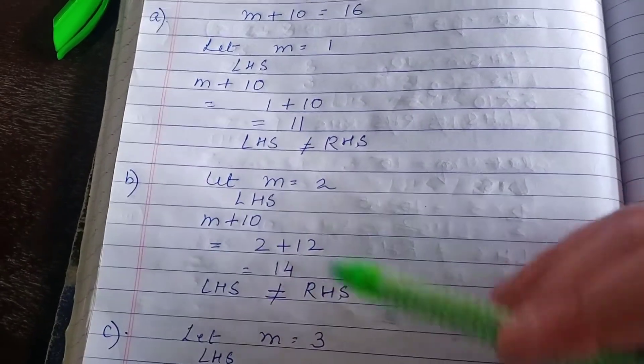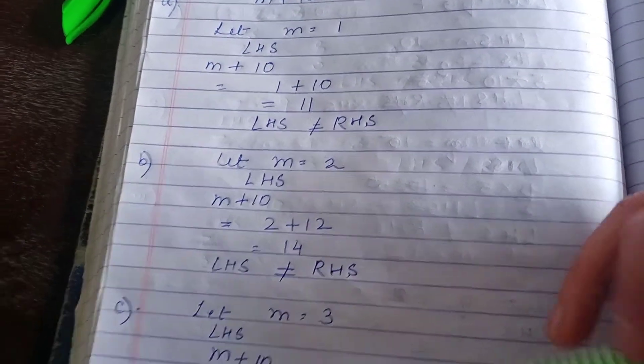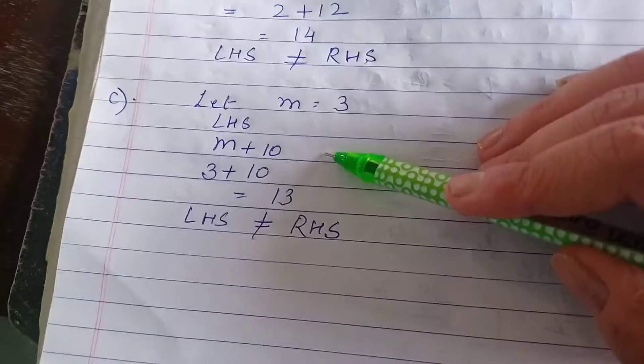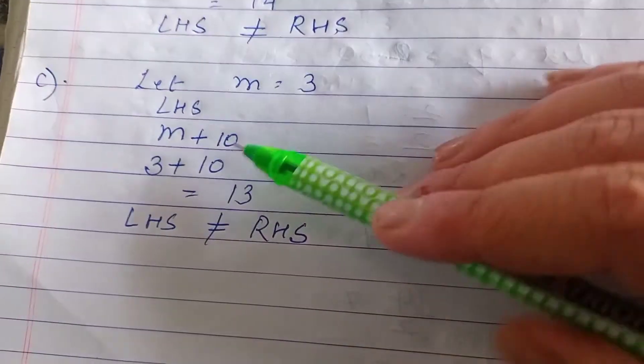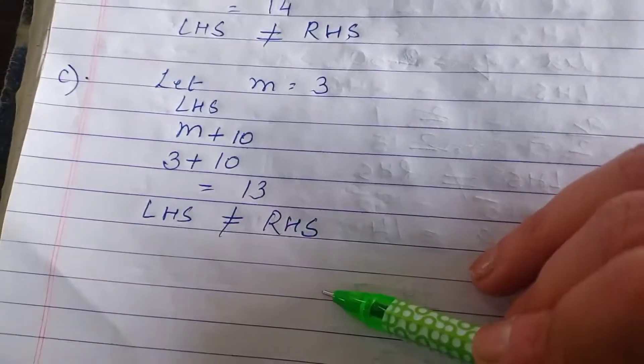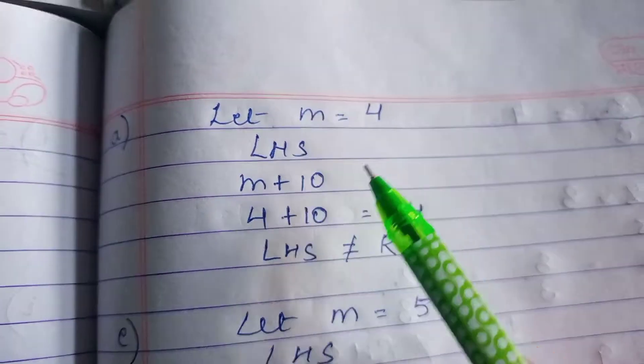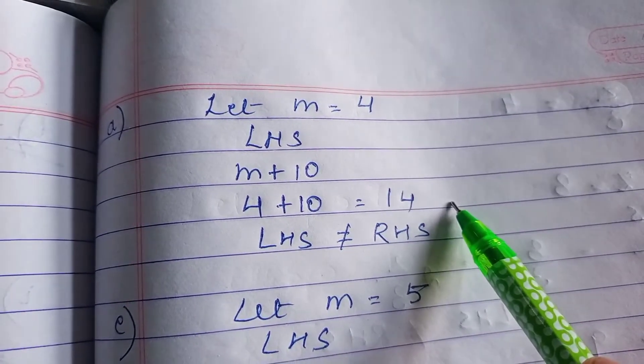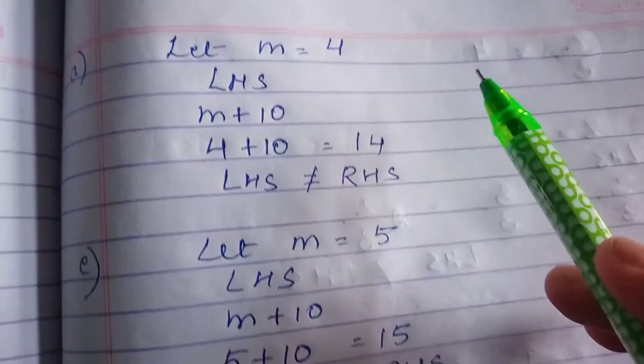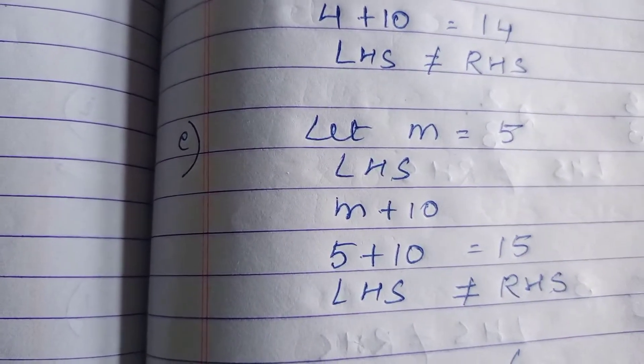Now, m equals 3. 3 plus 10 is 13, not equal. We'll move ahead. Let m equals 4. 4 plus 10 is 14. Again, it is not equal.